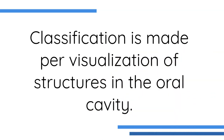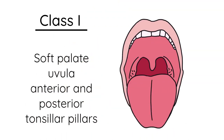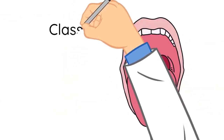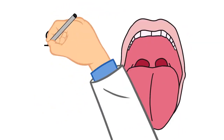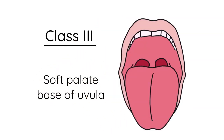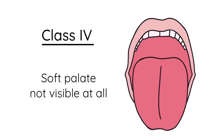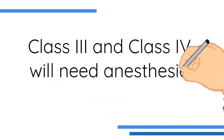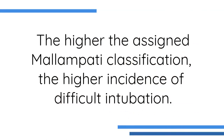Classification is made per visualization of structures in the oral cavity, covering Class 1 through Class 4. Class 3 and Class 4 will need anesthesia consultation. The higher the assigned Mallampati classification, the higher the incidence of difficult intubation.